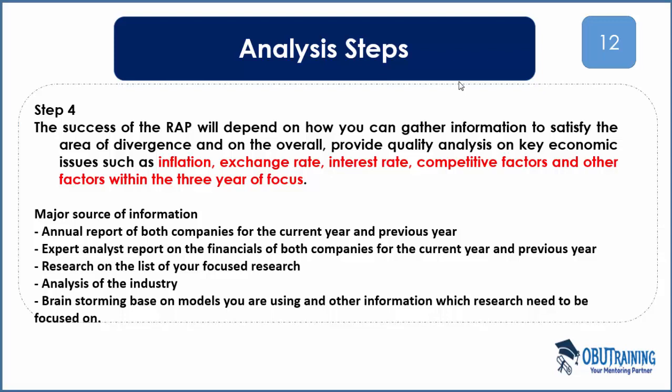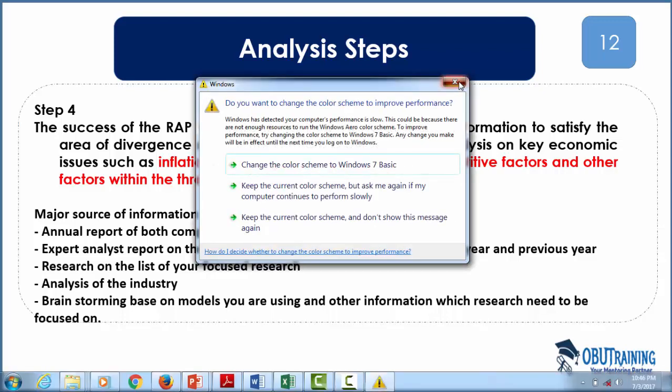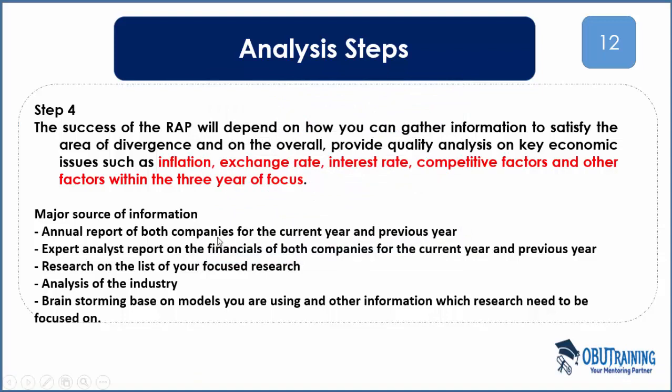After spotting out the issues, the first step in gathering information is the annual reports of the entity. You want to find out issues about the annual report of the main company and the competitor or comparator, starting from the directors' reports. As you are reading, be sensitive to get answers to your various focus research points — the various issues you spotted out. As you are reading the director's statement, you are sensitive to get ideas and answers.